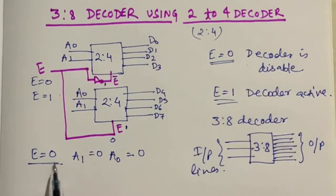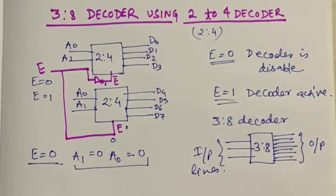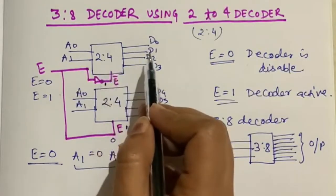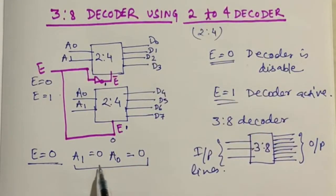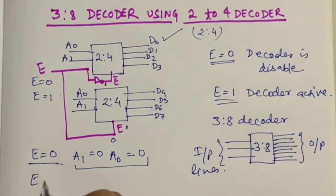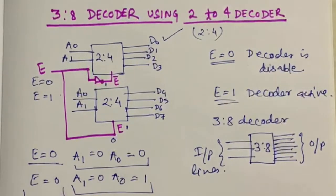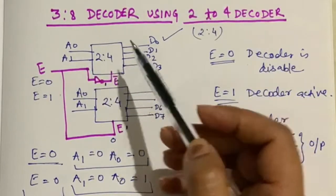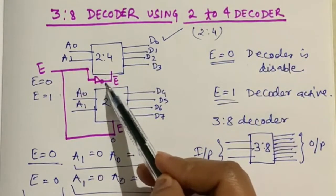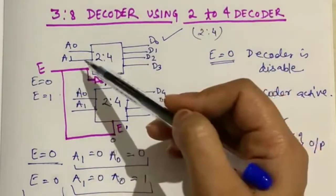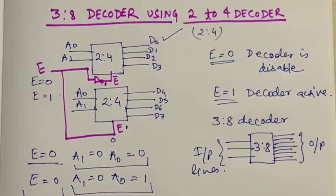Let's check a few input/output cases. First case: E=0, A1=0, A0=0. Since E=0, the first decoder is active and acts as a normal decoder, so D0 will be on. Second case: E=0, A1=0, A0=1. The first decoder is still active, and with A1=0 and A0=1 we get D1 as the active output.